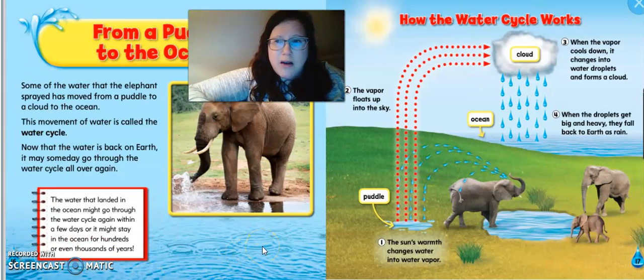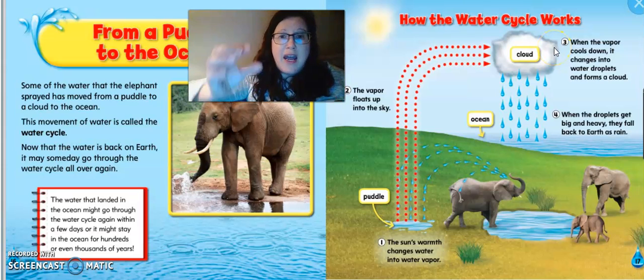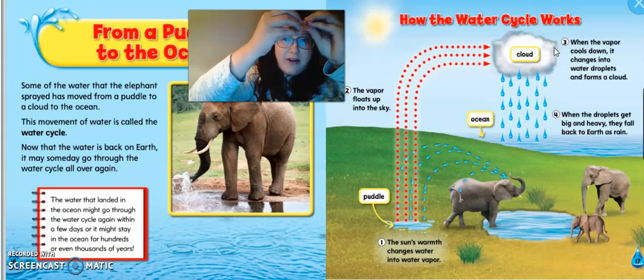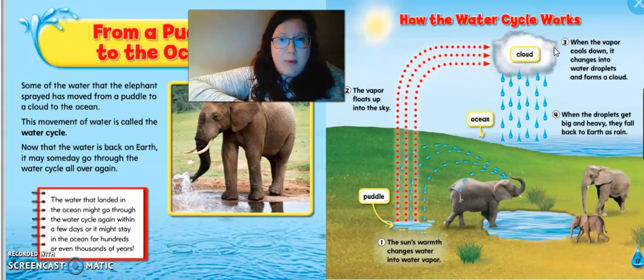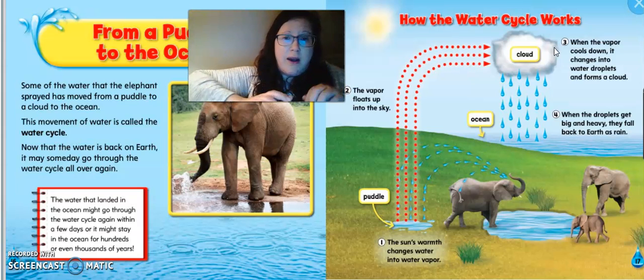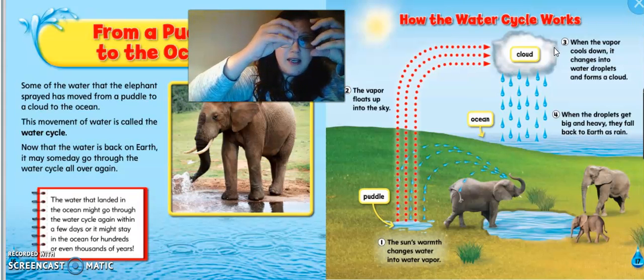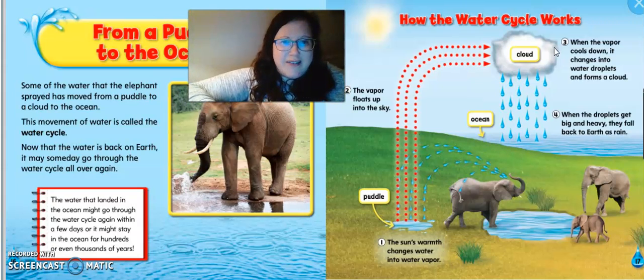So we're going to review over here what happens with our water cycle. So right here, first, we have this puddle that the elephants were playing in and it got really warm outside. And so the sun started to change the water into water vapor. The water vapor floats up into the sky. And we call that evaporation. So the water vapor goes up and that is evaporation. When the water vapor cools down, it changes into water droplets and forms a cloud. And the droplets condense together. So they condense together and they form raindrops. And when those droplets get too heavy, they fall down as precipitation. And tomorrow we'll learn about different types of precipitation. So first we go up. Evaporation, condensation, precipitation.